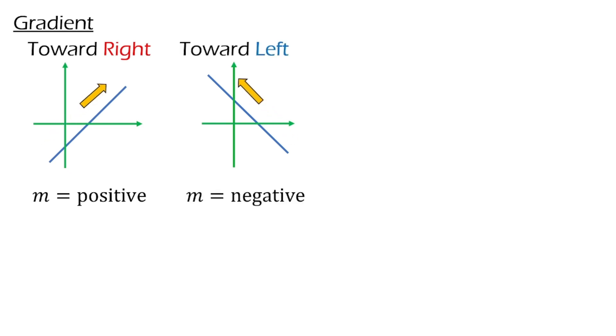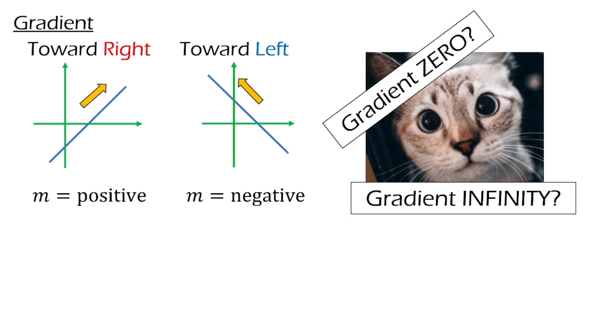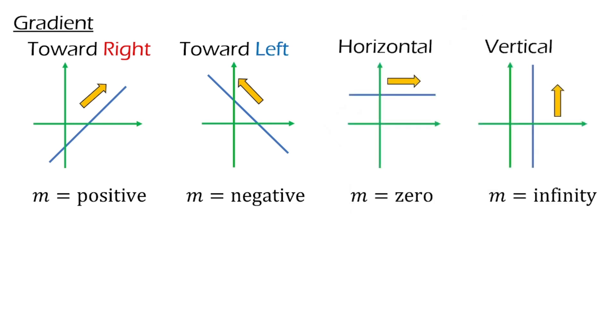Let's make a general overview on how the line look like based on the gradient. We saw that line with positive gradient will lean to the right, and line with negative gradient will lean to the left. You may ask, how about 0 and infinity?